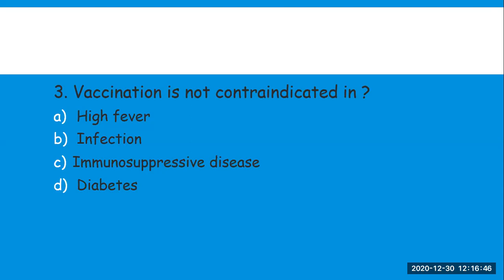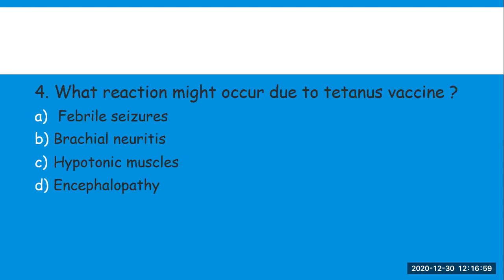Next question: vaccination is NOT contraindicated in — A) high fever, B) infection, C) immunosuppressive disease, D) diabetes. Vaccination is contraindicated in high fever, infection, and immunosuppressive disease. So vaccination is NOT contraindicated in diabetes.